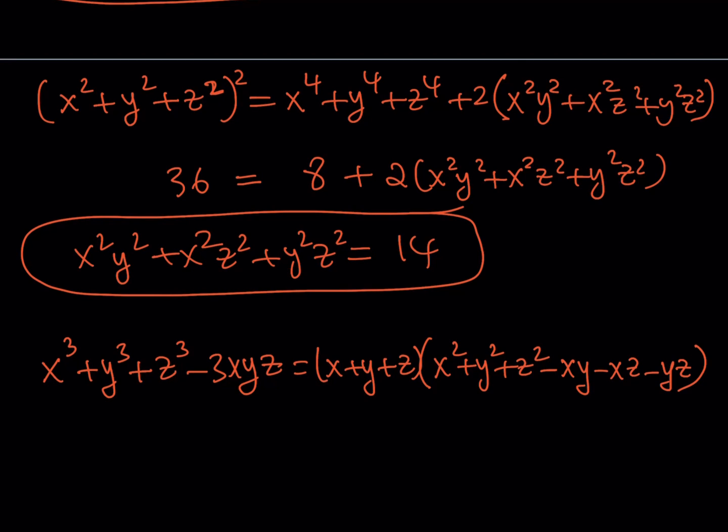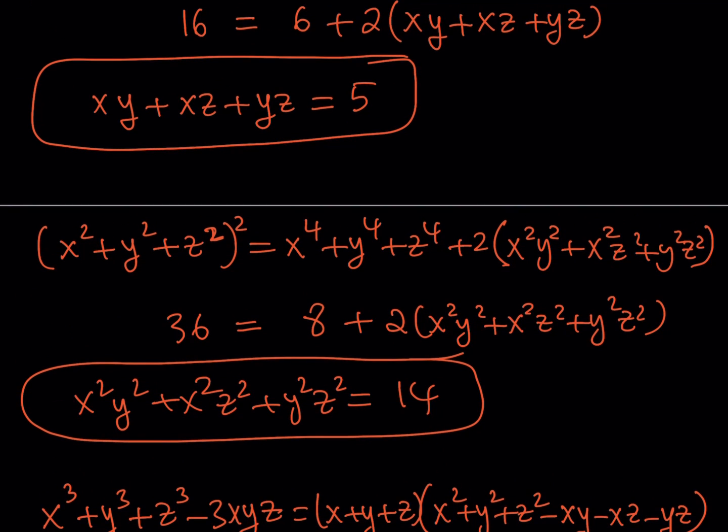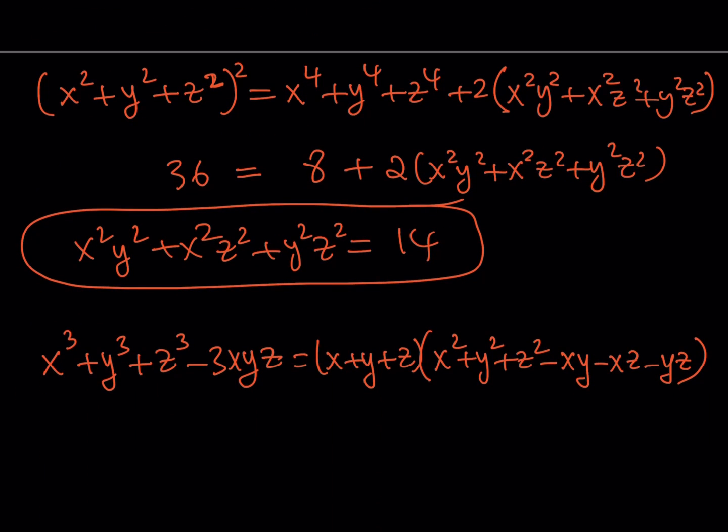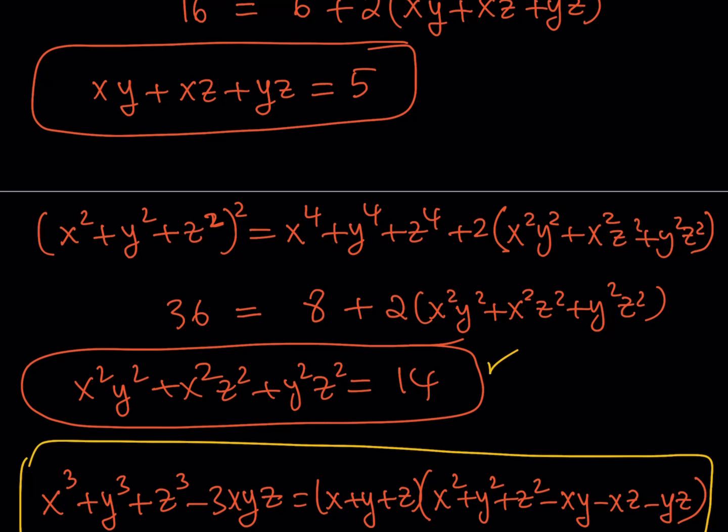Now this is the relationship we're going to use because we do need x cubed plus y cubed plus z cubed. We know xy plus xz plus yz, we do know x plus y plus z, and we do know x squared plus y squared plus z squared. So everything is good on the right hand side, but on the left hand side there is something problematic and that is xyz. Let's save this for now. And now what I'd like to do is I'd like to use this equation and this equation together.